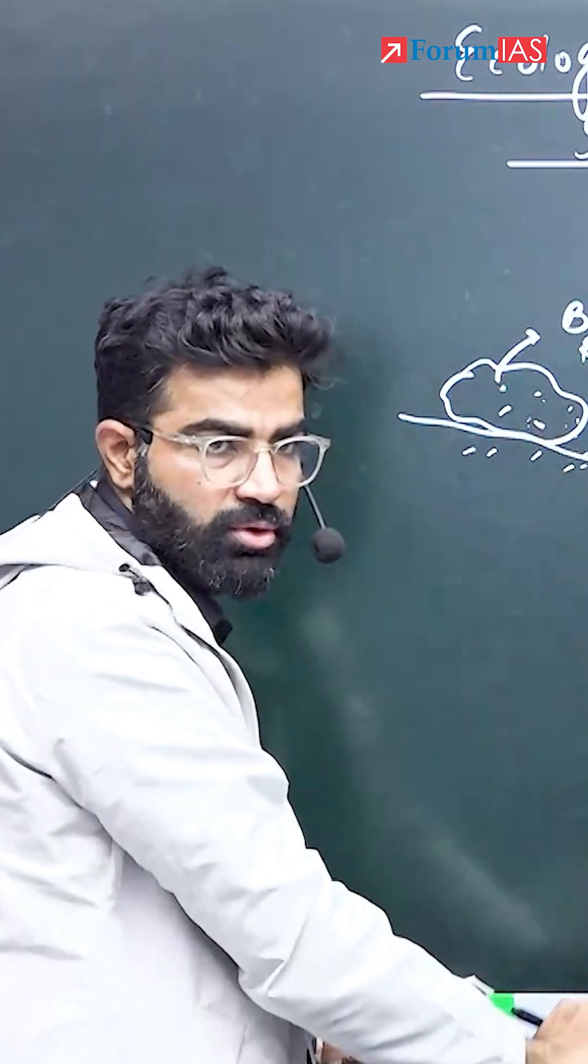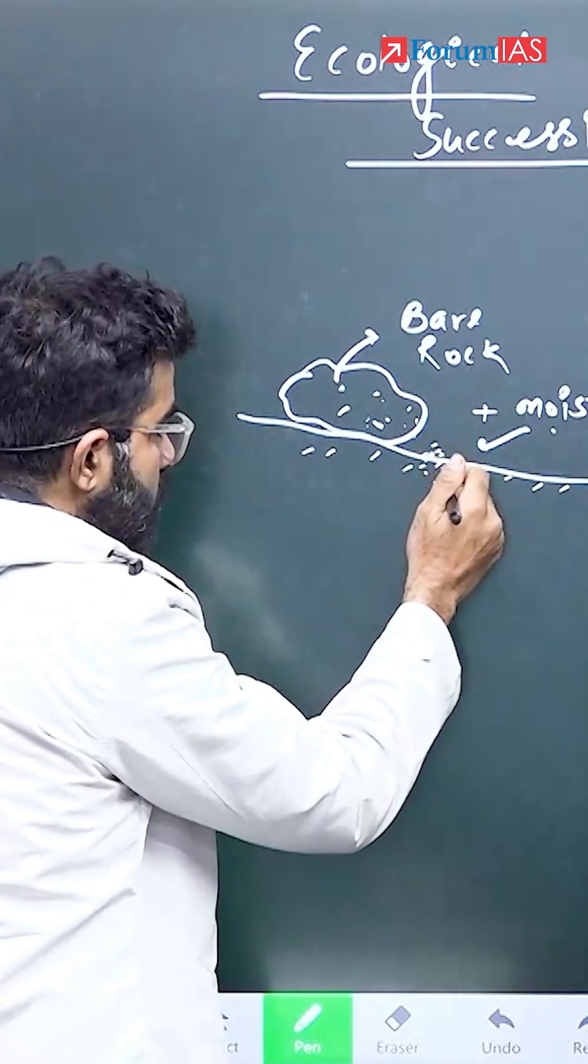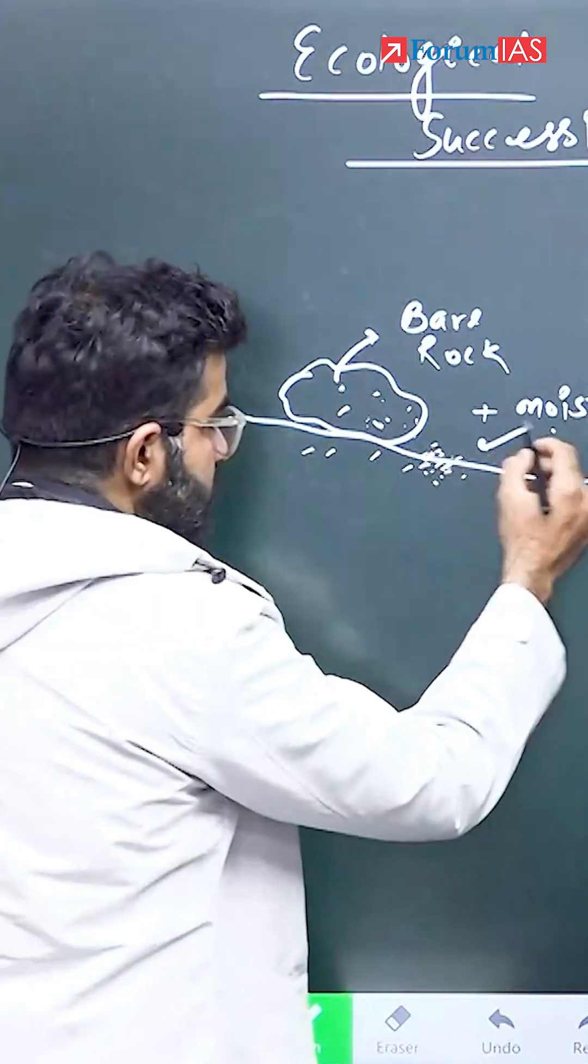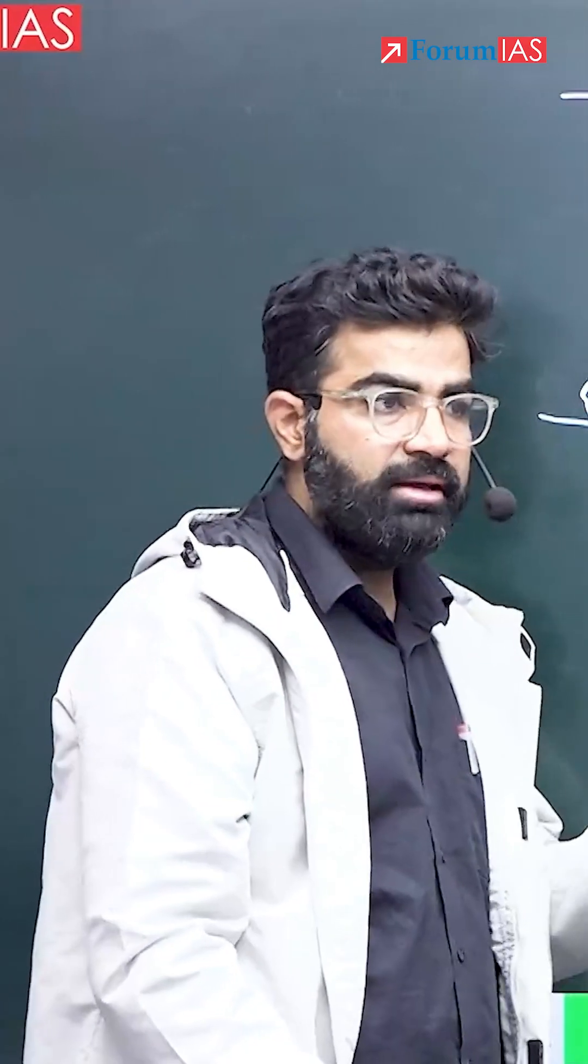This is the rock. What is the definition of rock? Aggregation of minerals. Some minerals will come down. These minerals along with some soil content, the moisture is there. Seeds will be there and therefore the cycle of life will start now.